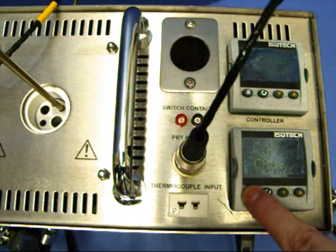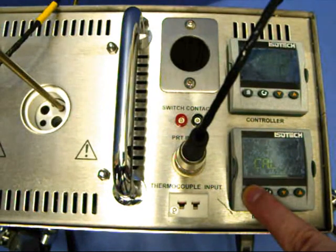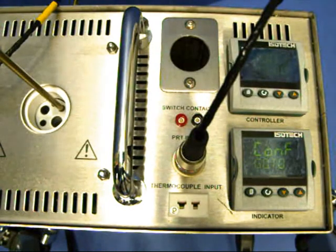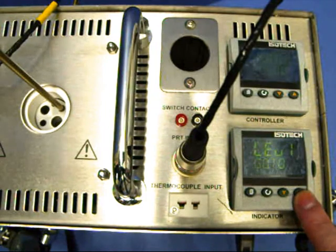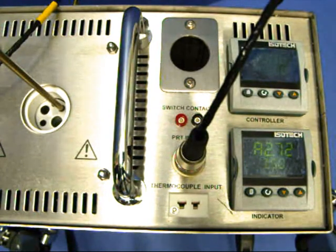To exit this mode hold the page key until the top display shows CONF GO TO. Then set the upper display to level 1 using the up key. While in this mode take care not to modify any other parameters.